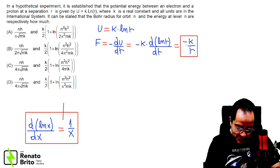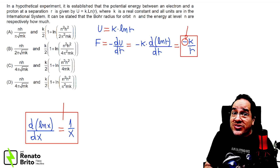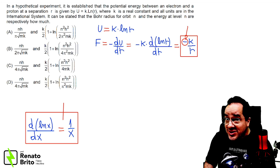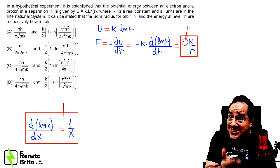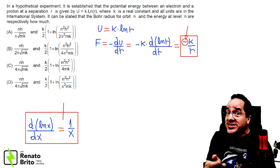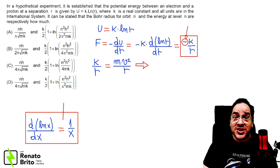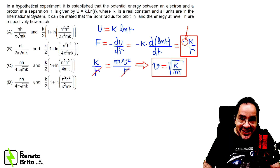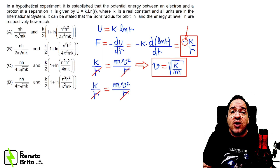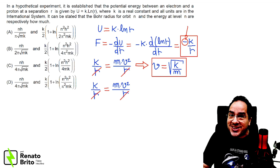This minus sign only tells us this is an attractive system, but this is not important to us at this moment. Now, let's remember Newton's second law. This force will play the role of the centripetal force, and from here we can find two important results: the expression of the orbital velocity of this electron, and from there we can also obtain the expression of the kinetic energy of this electron.